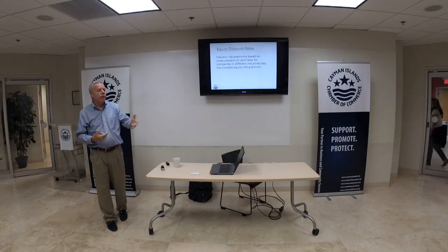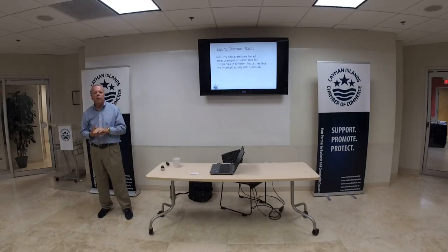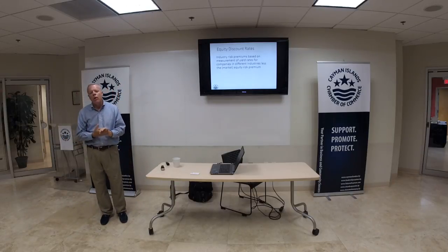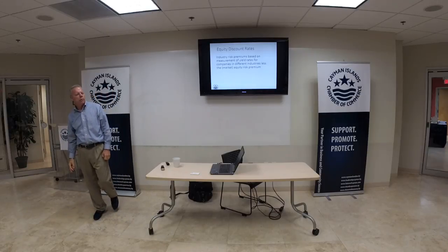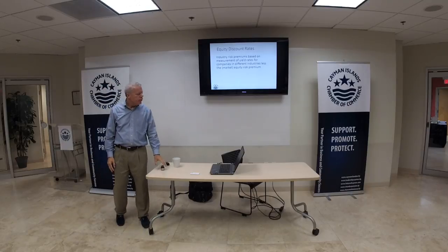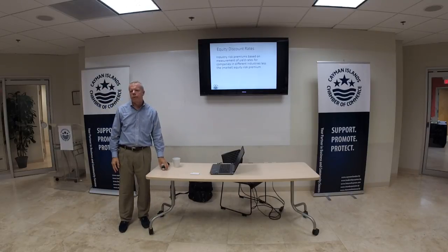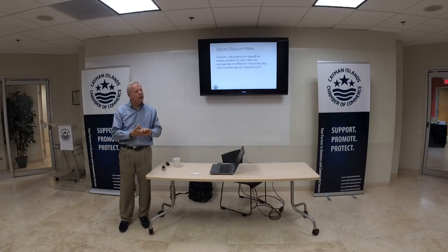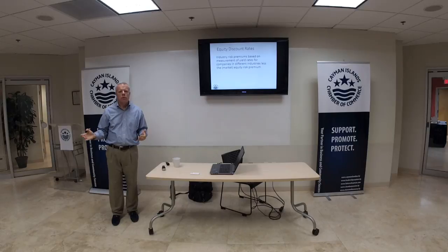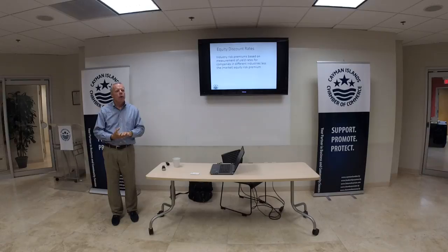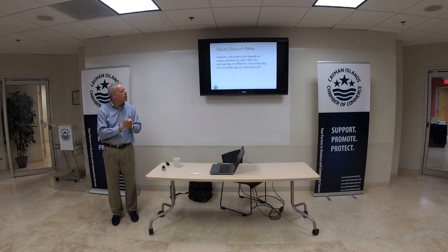That 1.2 beta translates into an industry risk premium. Duff & Phelps does a huge study — now available online with quarterly updates — constantly updating betas used to calculate industry risk premiums for dozens of different industries, both for the U.S. and internationally. Different countries have different risk rates. Much of what we discuss gravitates toward the United States because our economy here is innately tied to the U.S. economy, though there is some market risk premium in Cayman above the U.S. for identical companies, captured in a country risk premium.